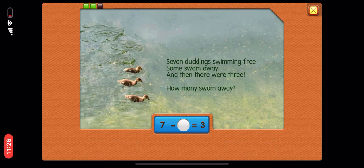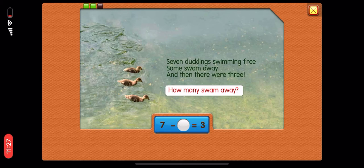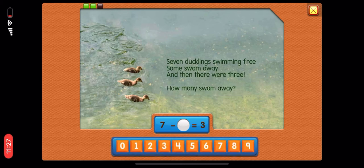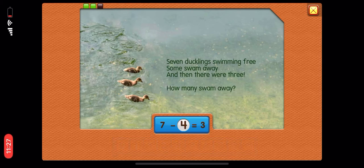Now let's solve the equation. How many swam away? Four. Yes, correct. Seven minus four equals three.